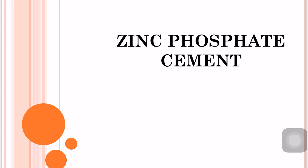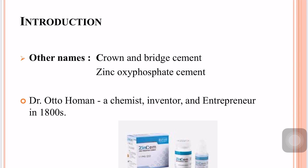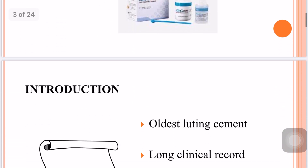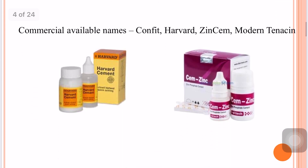Good morning to one and all. As part of an e-learning program, today we are going to discuss zinc phosphate cement. Zinc phosphate cement first appeared in the literature in 1879. Other names include crown and bridge cement and zinc oxy-phosphate cement. Dr. Otto Homan first invented zinc phosphate cement in the 1800s. It is the oldest luting cement, and its clinical record of success serves as a standard against which many newer cements are compared.